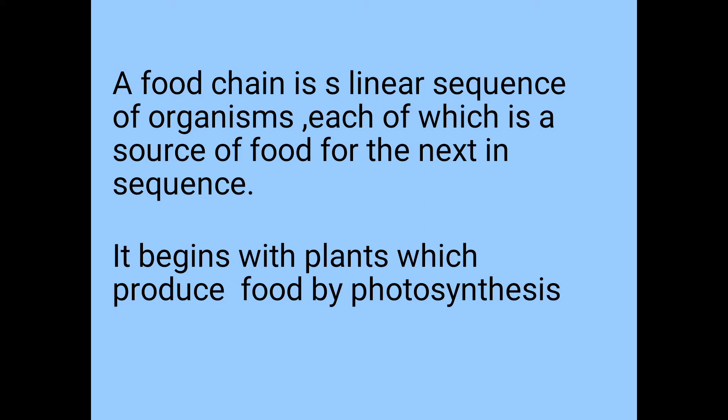A food chain is a linear sequence of organisms, each of which is a source of food for the next. It begins with plants which produce photosynthesis.